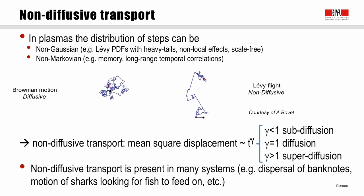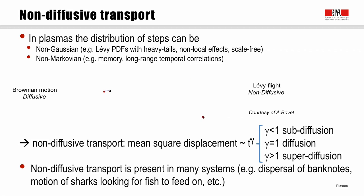Examples include the dispersal of banknotes: in your local town banknote transport may be described by a Gaussian distribution, but suddenly you take a plane to a different country and use banknotes there — a large jump not accounted for by Gaussian statistics. Another example is the motion of sharks searching for fish: they explore a local reservoir, and when the fish are depleted they make a very long jump — a Lévy flight — perhaps thousands of kilometers to a new location.